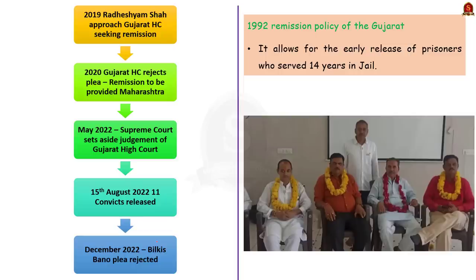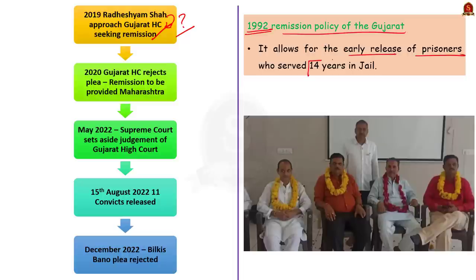In May 2017, the Bombay High Court upheld the conviction and life imprisonment of all 11 convicts. In July 2017, the Supreme Court also reiterated the conviction and life imprisonment of all 11 convicts. But in 2019, one of the 11 convicts approached the Gujarat High Court seeking remission, because the 1992 remission policy of Gujarat government allowed for early release of prisoners who served 14 years in jail. The Gujarat High Court in 2020 rejected the remission plea, saying that since the case proceedings took place in Maharashtra, the remission plea should be filed in the Bombay High Court.